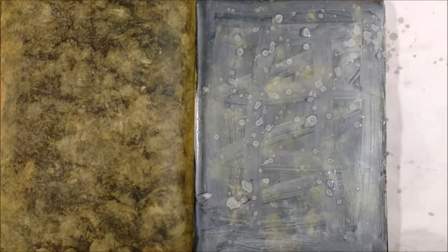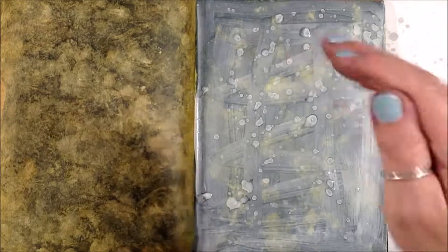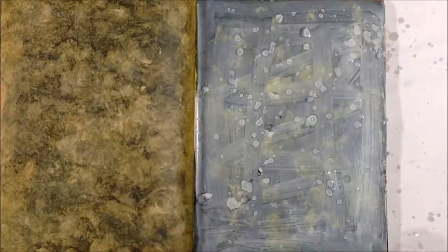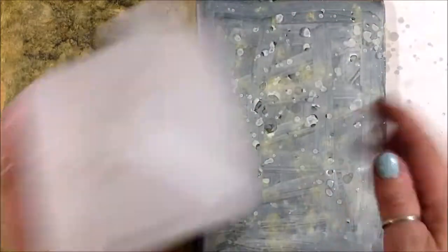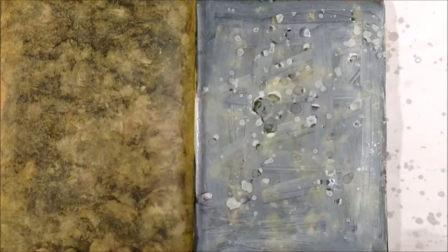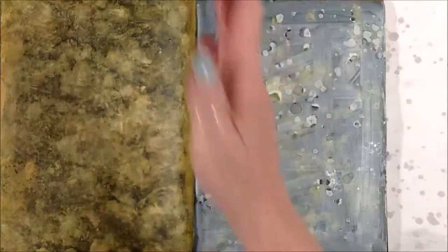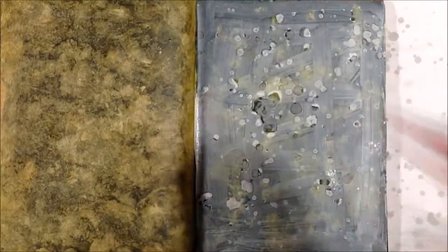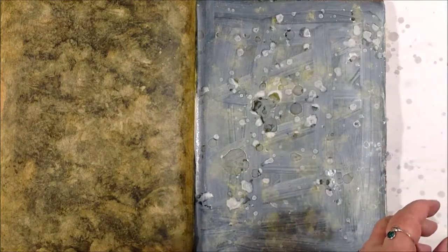I'm going to do the same thing with some isopropyl alcohol. This is 91% and I'm just dripping some of that on there from my fingertips. I'm using my fingers because I'll get bigger drips and also smaller drips. If you want more controlled drips, you can tap it off the end of a brush or spray it on with a sprayer.